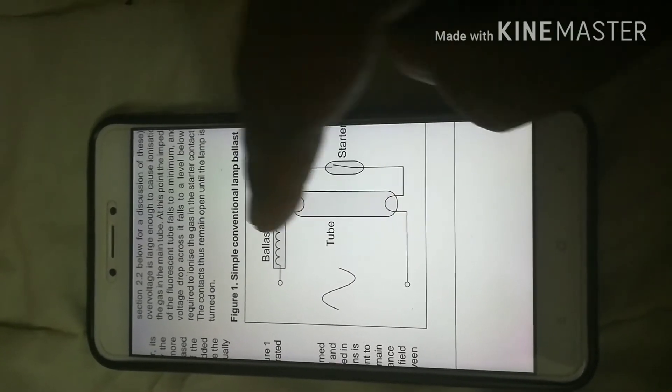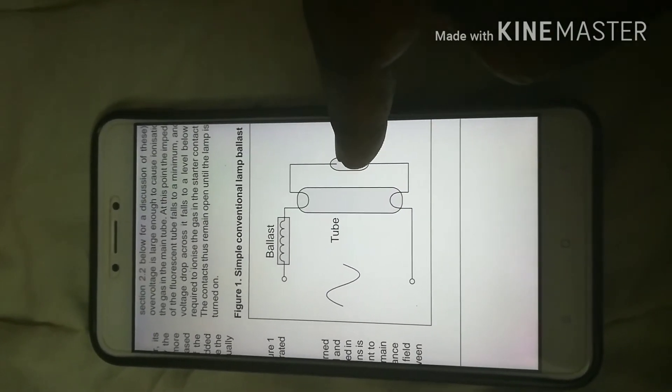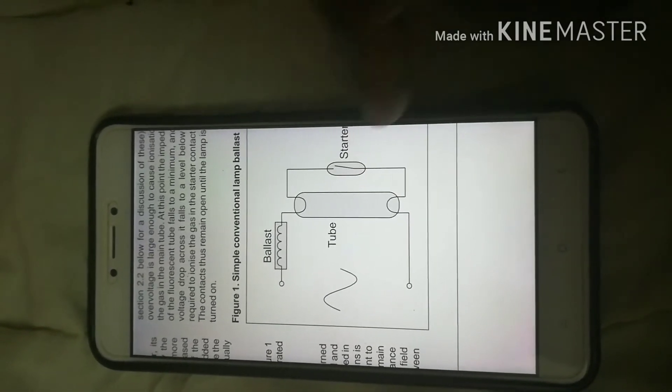So once the current starts conducting through the tube, two things need to happen. First, the starter should open up.